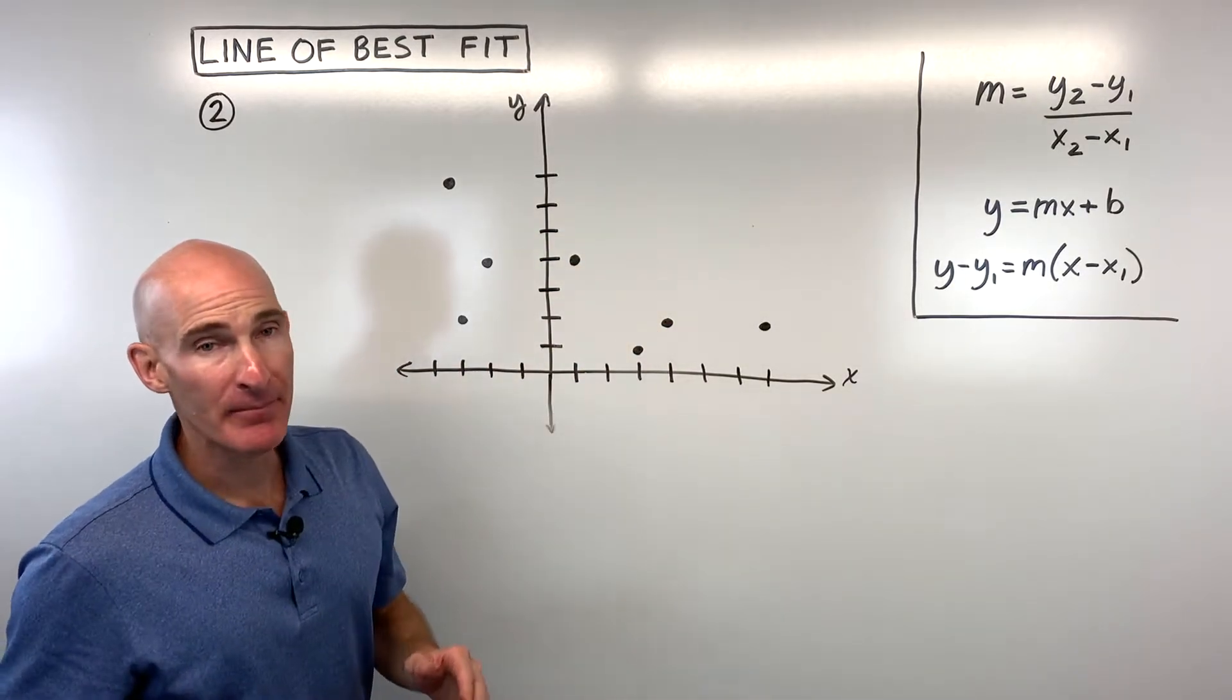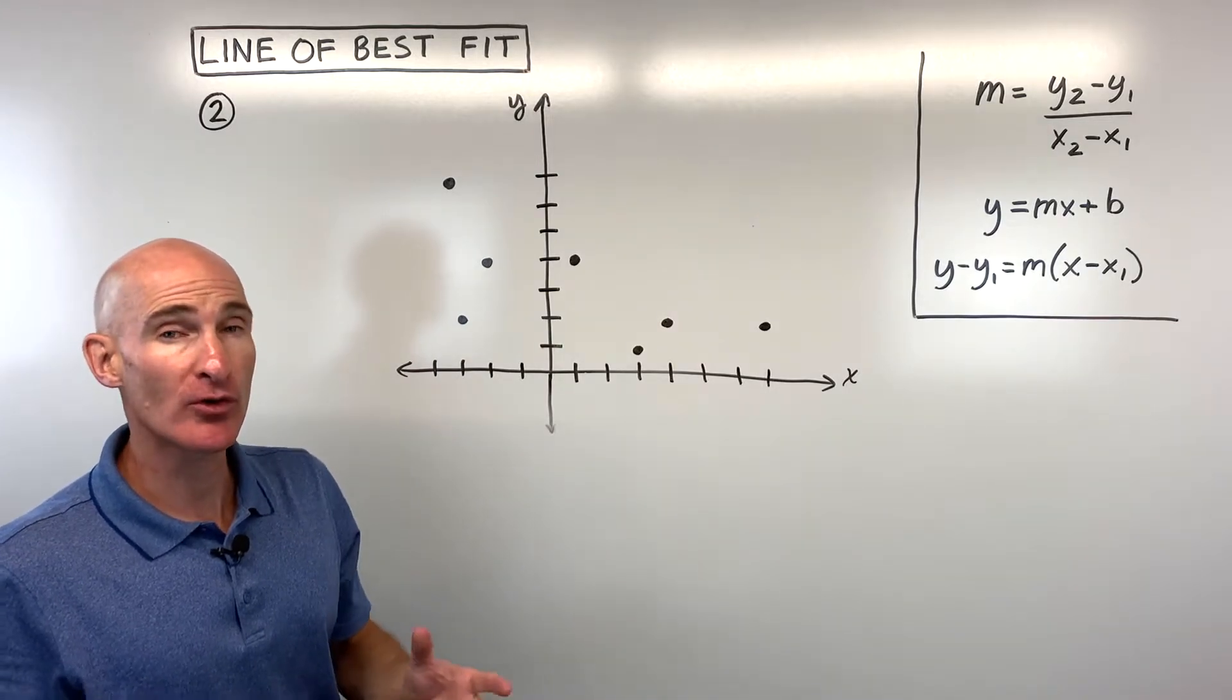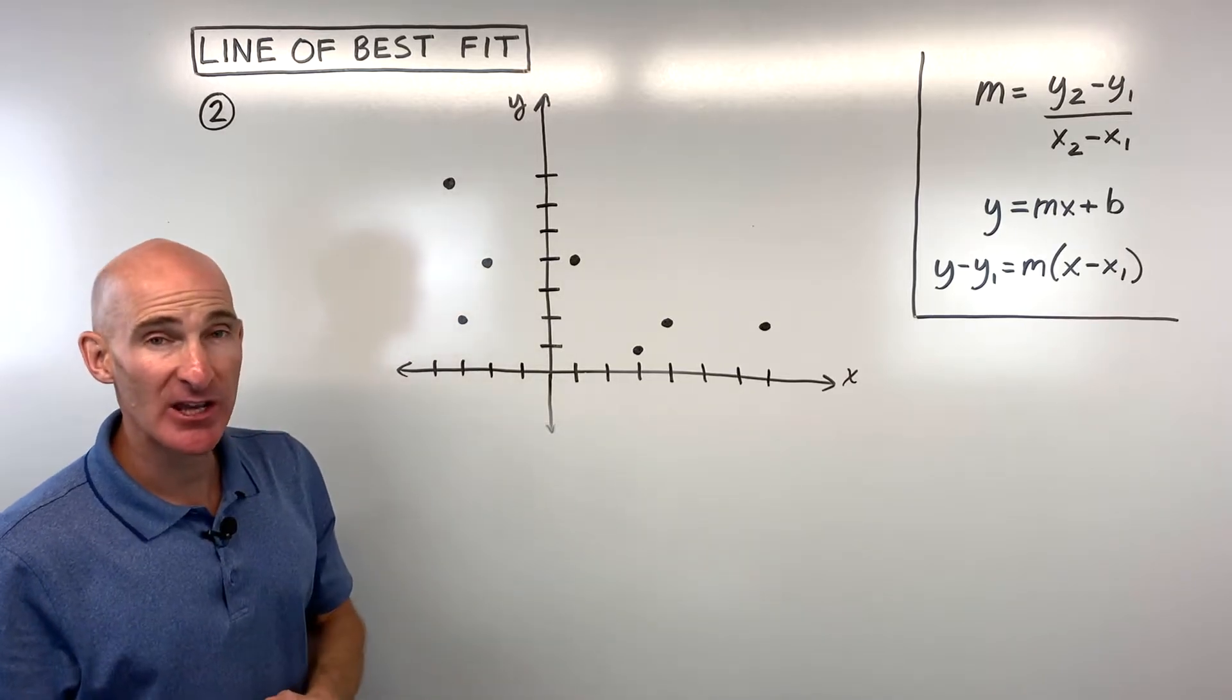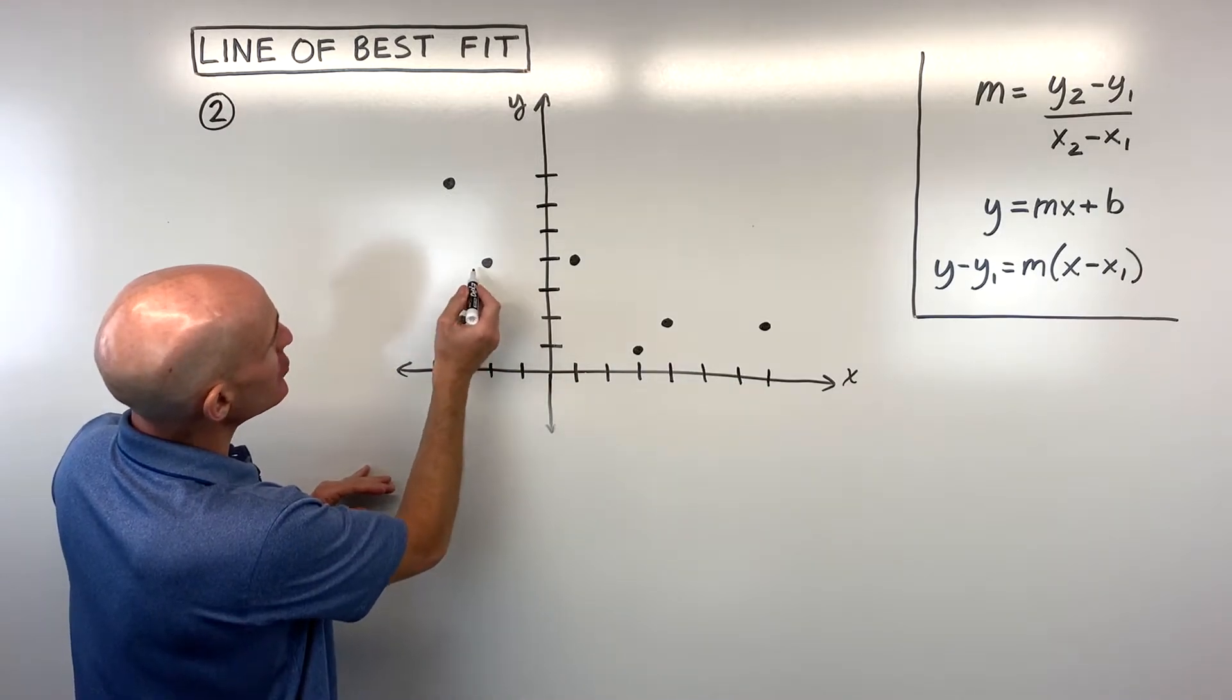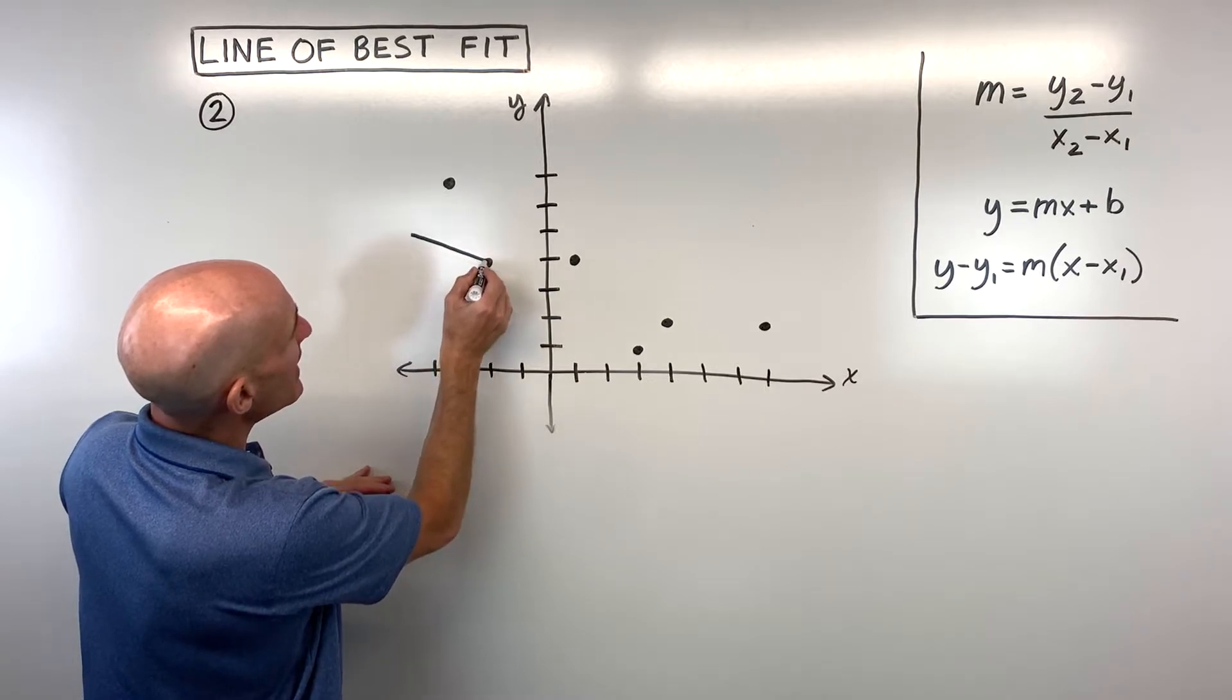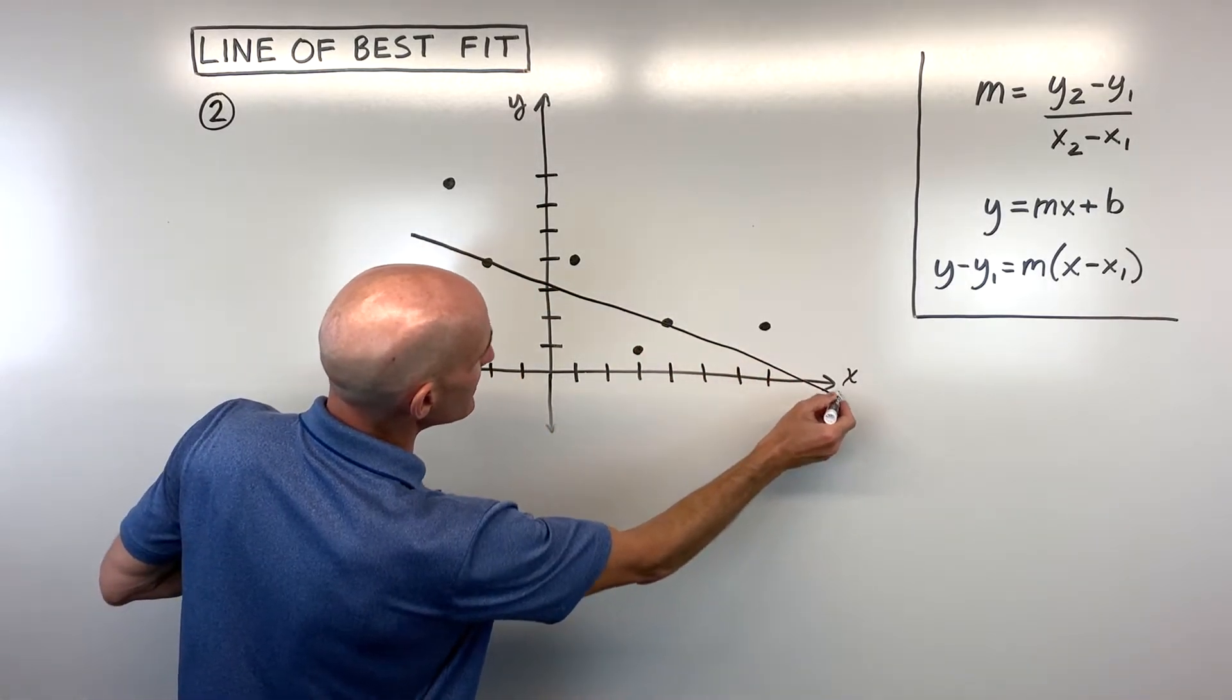I want to draw it in such a way that the line comes as close to the points as possible. Of course, some are going to be a little bit above, some are going to be a little bit below. This is just an estimation. This is not the exact line of best fit. I have a video again, like I said, talking about that linear regression. You can check that out if you're interested. So for this one, I'm just going to estimate that our line looks something like this.